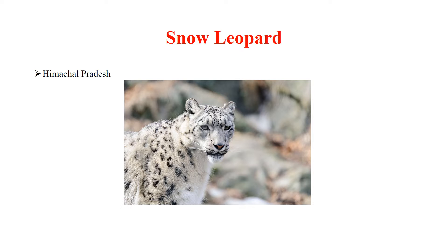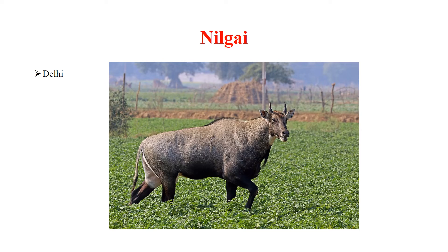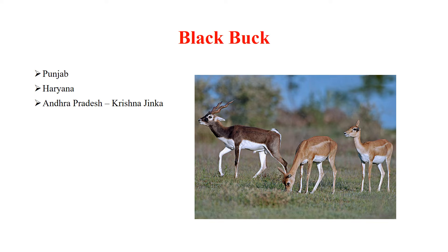Musk Deer is the state animal of Uttarakhand. Nilgai is the state animal of Delhi. Blackbuck is the state animal of Punjab, Haryana, and Andhra Pradesh.